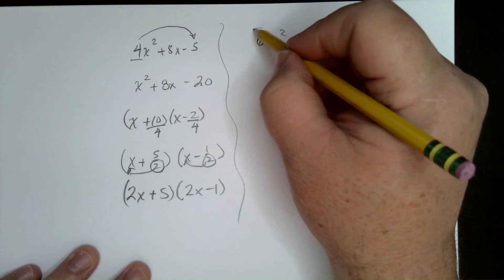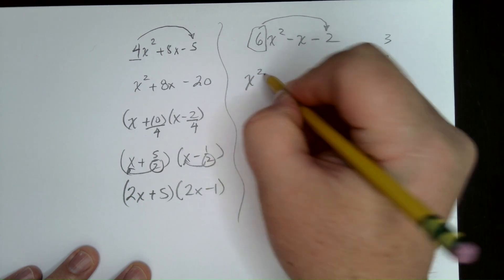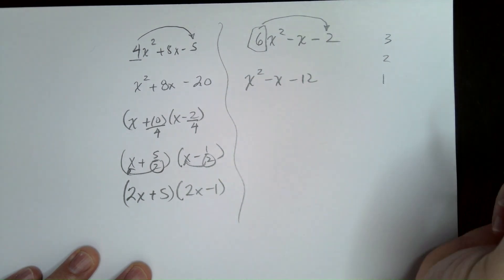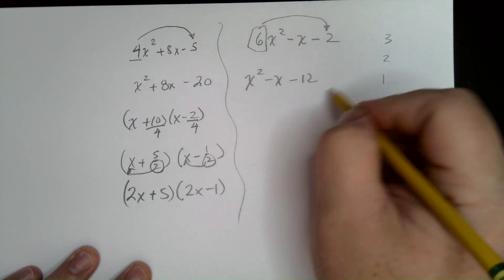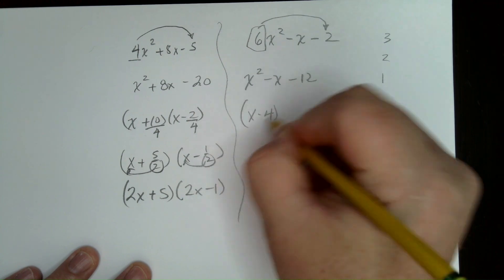All right. So, we're going to take that leading coefficient. We're going to multiply it by the constant over there. Right? Then we're going to factor this. We're looking for two numbers multiplied by 12. Add to 1. That would be a minus 4 and a plus 3.